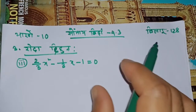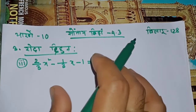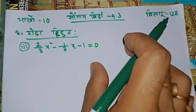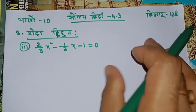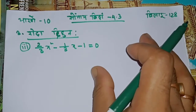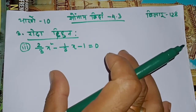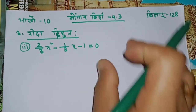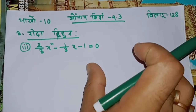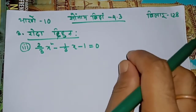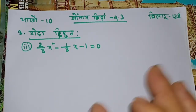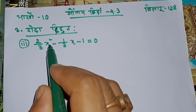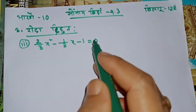We have to use the word, for example, and we can use that word for example. This is 3x⁴ - 1 by 3x - 1 is equal to 0.